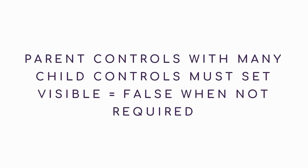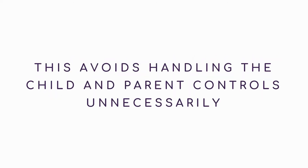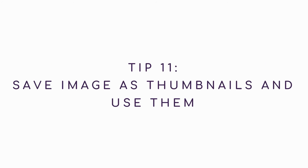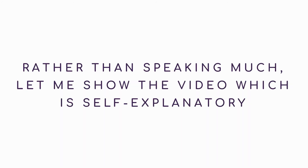Parent controls with many child controls must set Visible to false when not required. This avoids handling the child and parent controls unnecessarily. Tip 11: Save images as thumbnails and use them. Rather than speaking much, let me show the video which is self-explanatory.